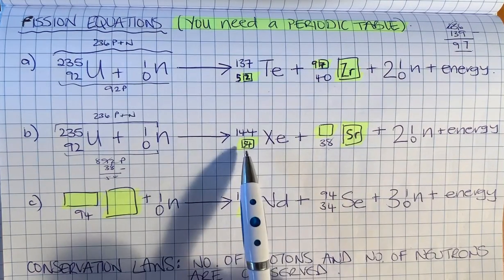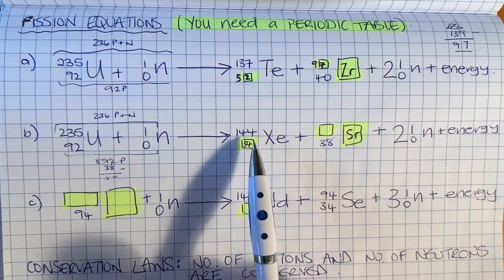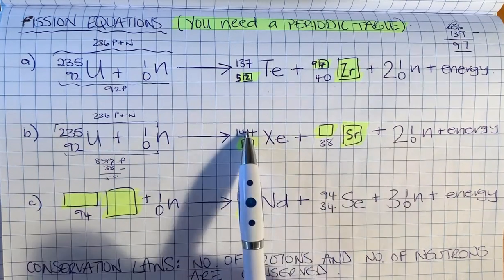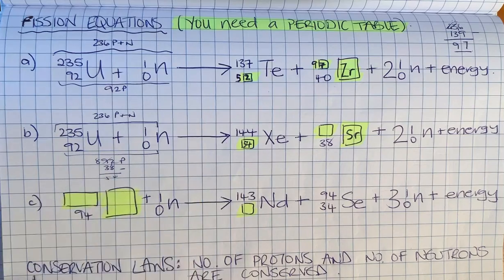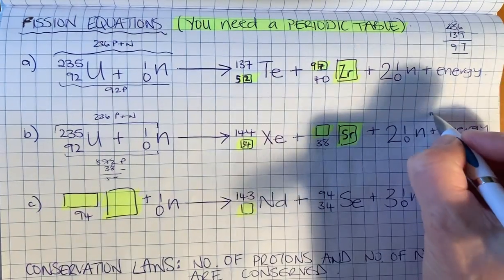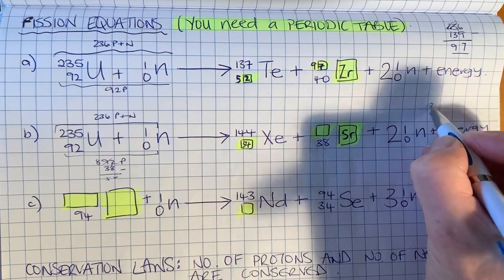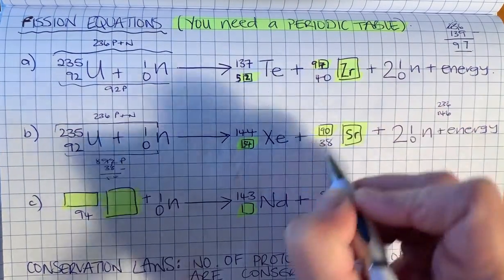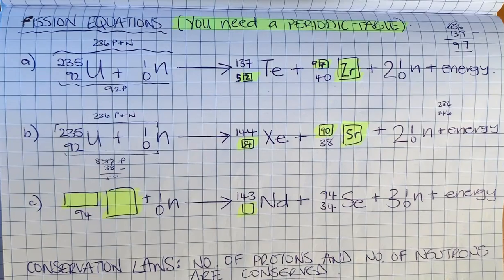Again, we need to conserve the mass number. We've got two neutrons and 144 here, which makes 146. We need to get to 236, so that's 90. Strontium must have 90 there.